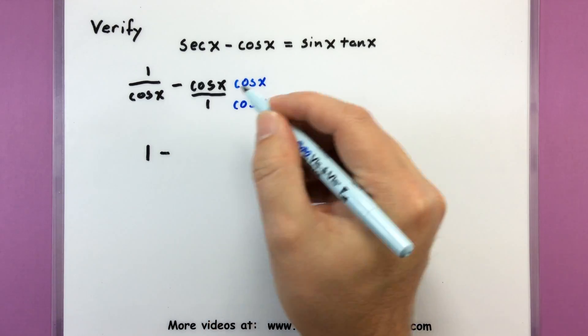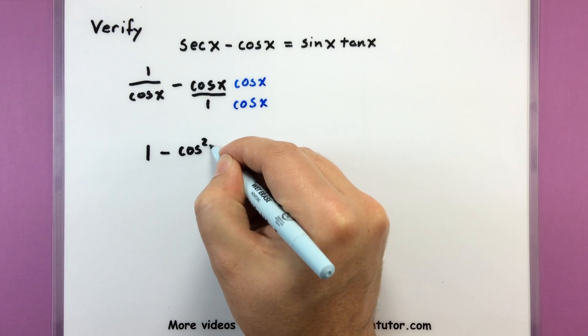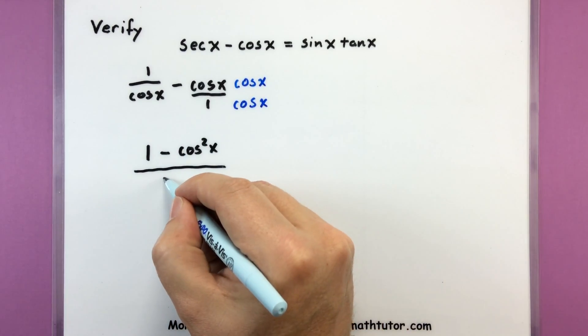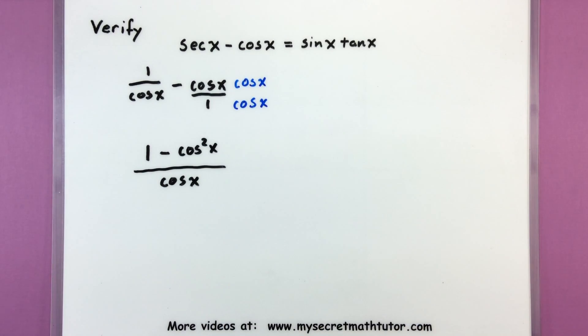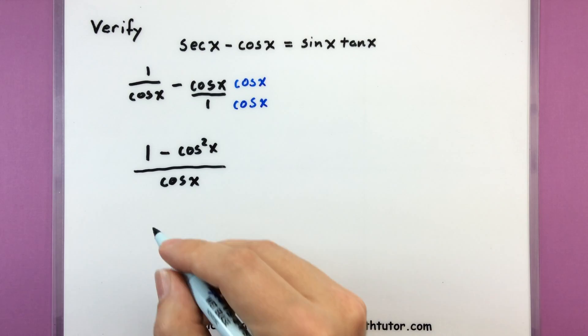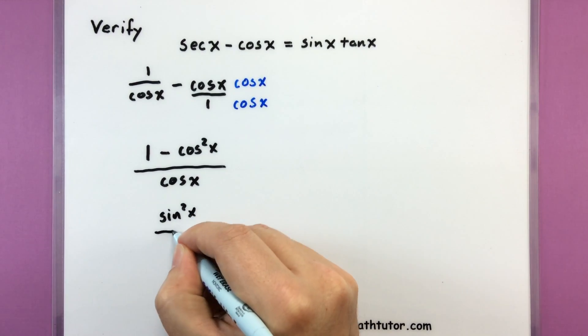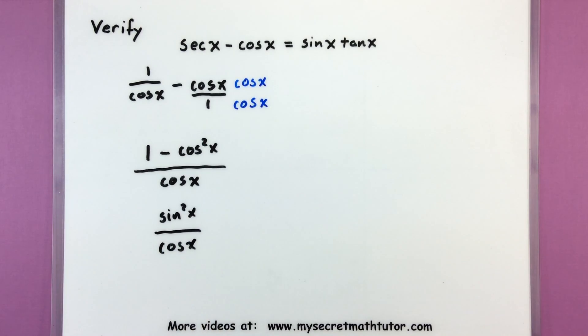Let's see what that gives us. So we'll have one minus these cosines will multiply so cosine squared of x all divided by my common denominator so all over cosine of x. I'm feeling a little bit better about this. On the top I recognize that we actually have a Pythagorean identity. One minus cosine squared is equal to sine squared.